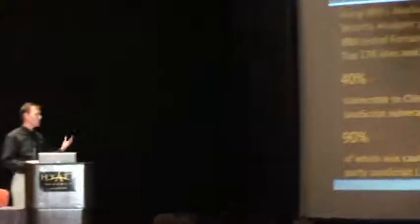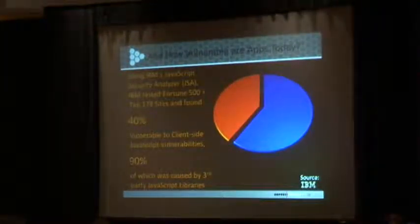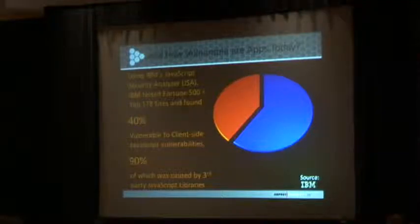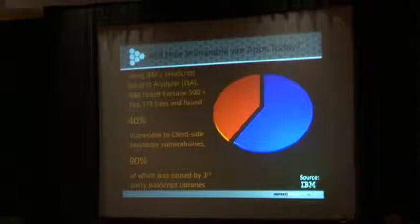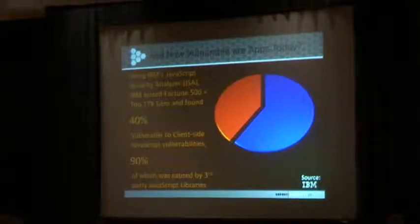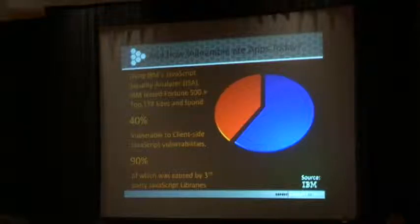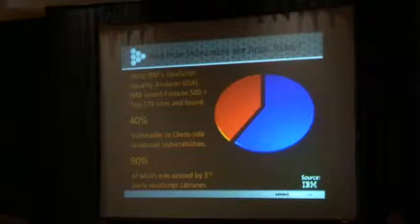This data comes from IBM. They've been studying large public websites — they went out and looked at the Fortune 500 plus some other websites. What they found was that through automation, 40% of those websites had DOM-based XSS. I'm not surprised. In fact, I wouldn't be surprised if that number is much higher because there are clearly things their tool is going to miss. They also found that 90% of the cause was third-party JavaScript libraries that developers were using.